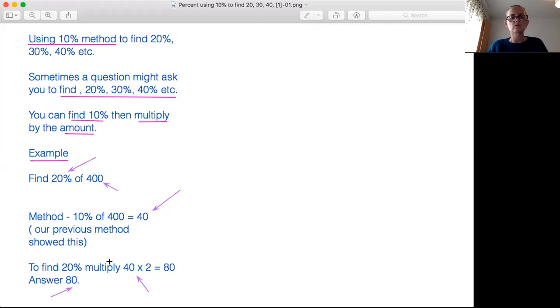We can use the method: 10% of 400 is 40 because we've divided 400 by 10. And what do we do? We multiply the 40 by 2 because we're looking for 20%. So 40 times 2 equals 80. So our answer is 80. 20% of 400 is 80.